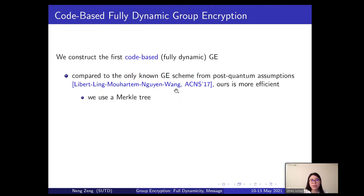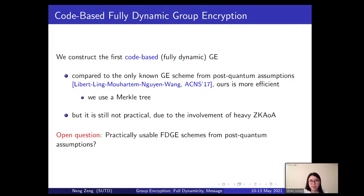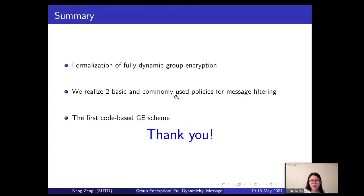We obtain the first construction of code-based fully dynamic group encryption. Compared to the only known group encryption from post-quantum assumptions by Libet et al., ours is more efficient mainly because we use a Merkle tree, which can be viewed as a weak form of signature. However, it is still not practical due to the involvement of heavy zero-knowledge arguments. An interesting open question remains: can we construct a practically usable fully dynamic group encryption scheme from post-quantum assumptions? In summary, we give a formalization of fully dynamic group encryption, realize two basic and commonly used policies for message filtering, and construct the first code-based group encryption scheme. Thank you for listening.